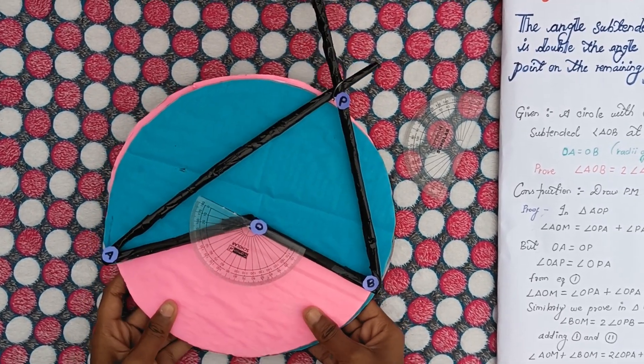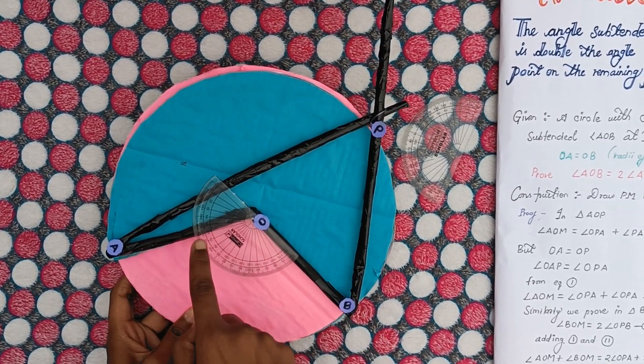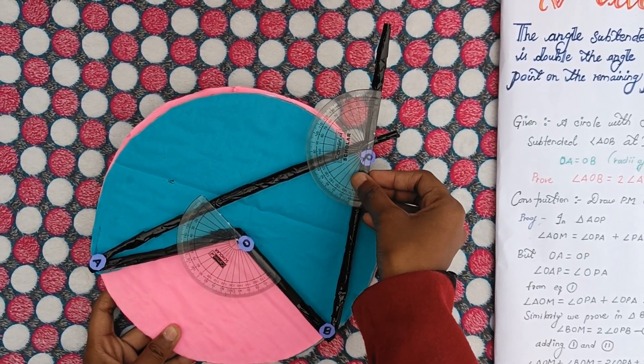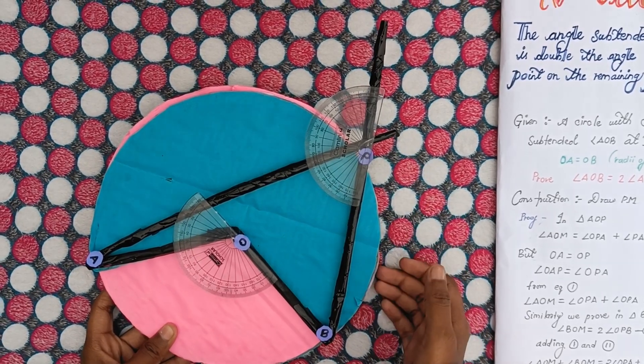Hence we can verify by an example. Let us assume this angle is 120 degrees, so this angle will be 60 degrees. Here we can see that this angle will be 60 degrees.